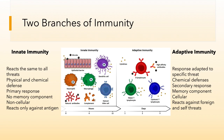The adaptive immune system is our secondary defense. It will occur and carry out its activities far after the innate system. It consists of both chemical and cellular defenses, and it has a memory component. This is an important difference between the innate and adaptive immune system — there's a strong memory component with the adaptive immune system. The adaptive immune system will react against both foreign and self-threats.